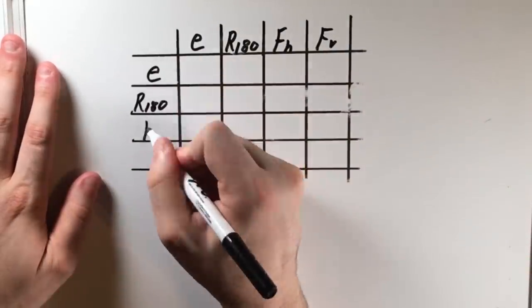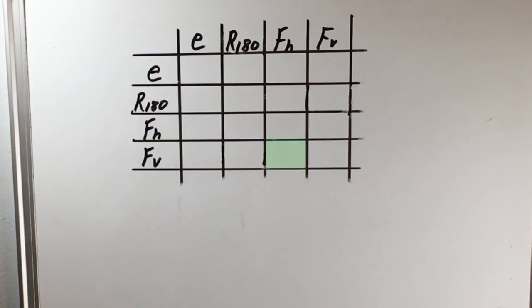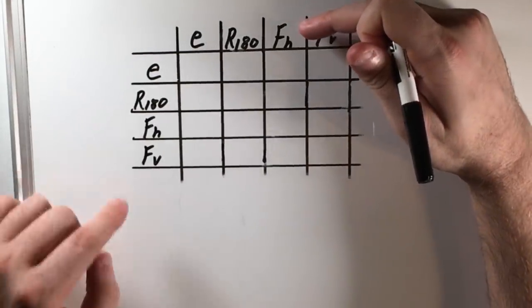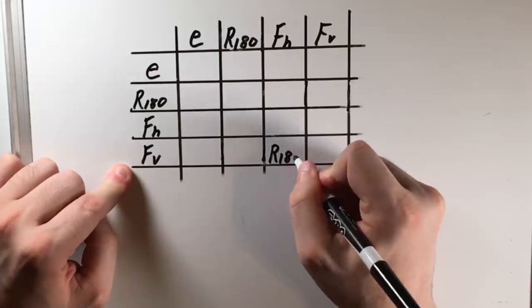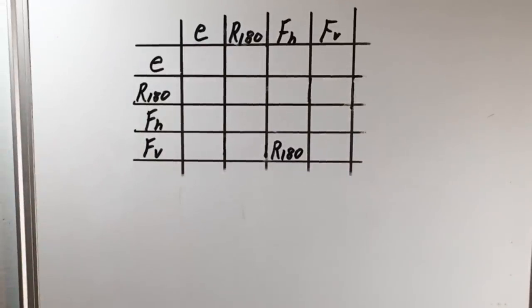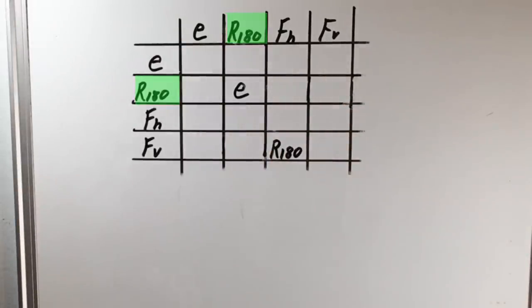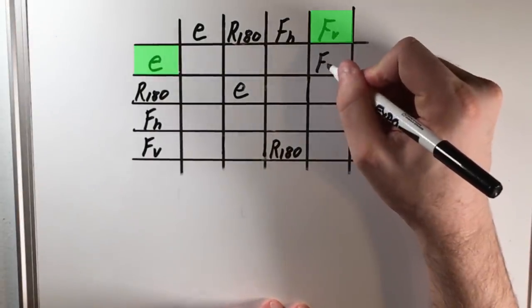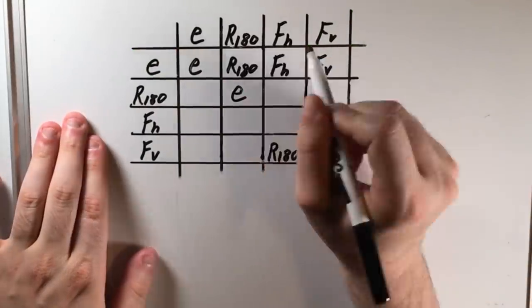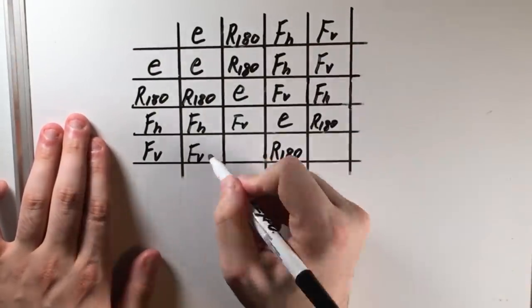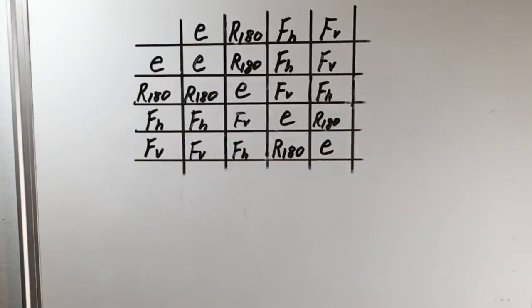Now what we're going to do is actually make a table that has all four moves going across the top and down along the side. Now we can fill in the middle spot here that says FH followed by FV yields the rotational symmetry. If I perform maybe a 180 degree rotation followed by another, I get the original configuration, meaning I could say R180 on R180 is just E, that do nothing element. And I can fill out this entire table and what you'll see is everything in the table is just one of the four symmetries we originally found. The fact that any two symmetries just yield another makes this set a group.